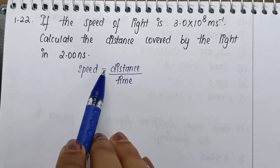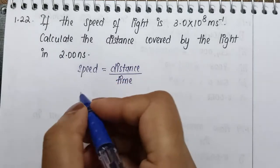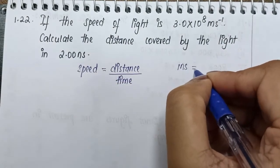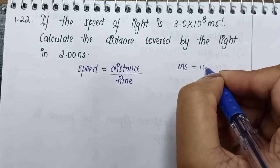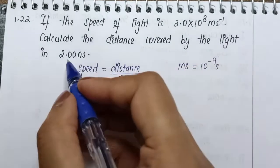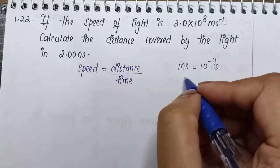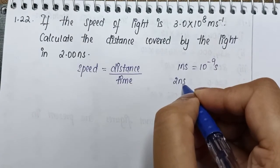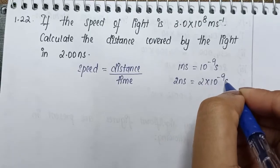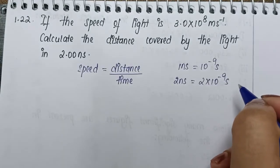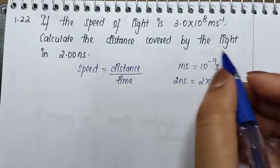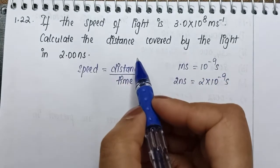First we will see the conversion. 1 nanosecond is equal to 10 to the power minus 9 seconds. Therefore, 2 nanoseconds is equal to 2 into 10 to the power minus 9 seconds. Light covers a distance in 1 second equal to 3 into 10 to the power 8 meters.